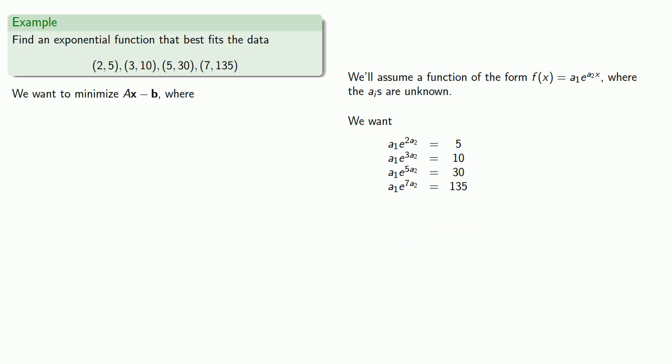So what can we do? To get a system of linear equations, we can hit it with a log. So let's consider this first equation, A1E to power 2A2 equals 5. If I hit both sides with a log and simplify, I get something that is a linear equation if we think about our unknowns as being log of A1 and A2.